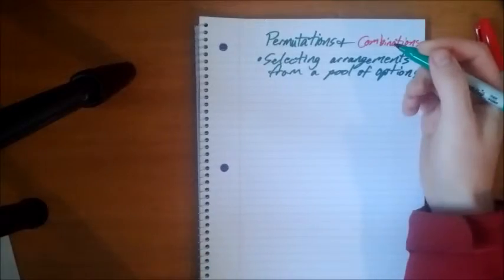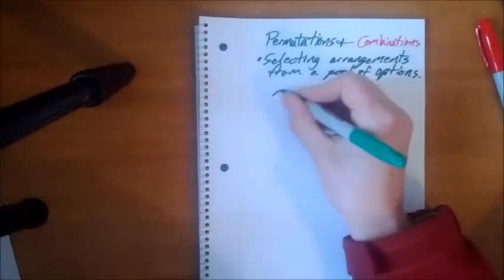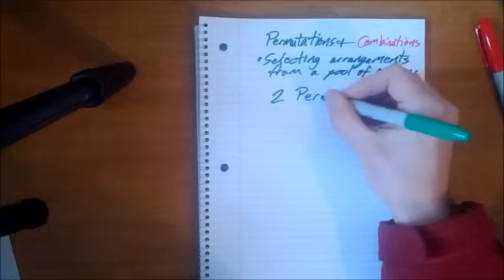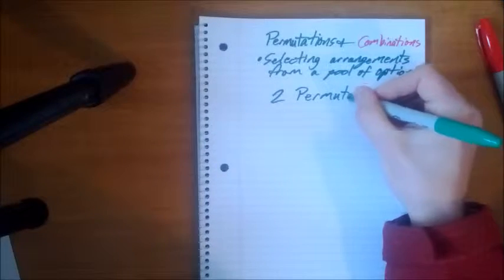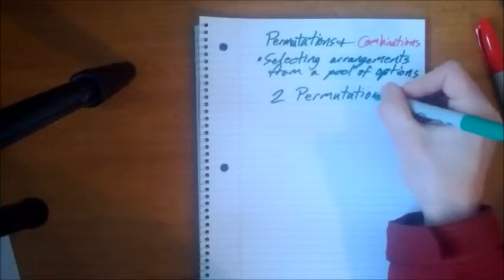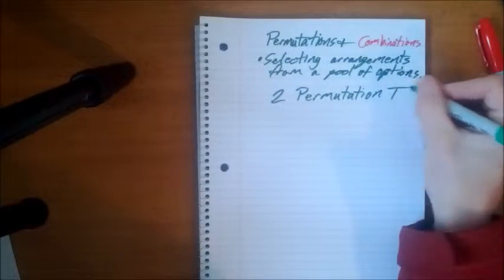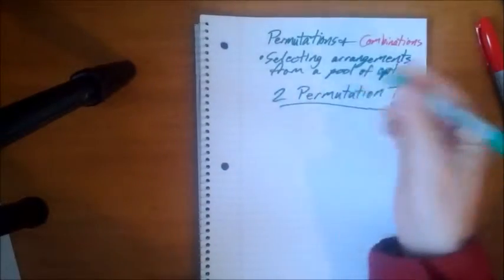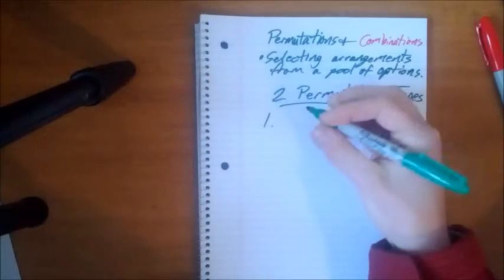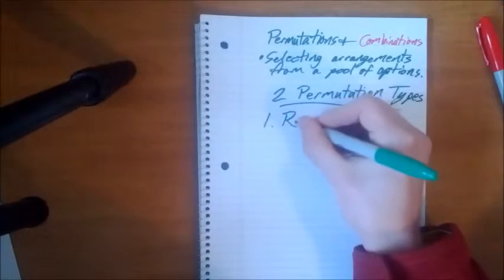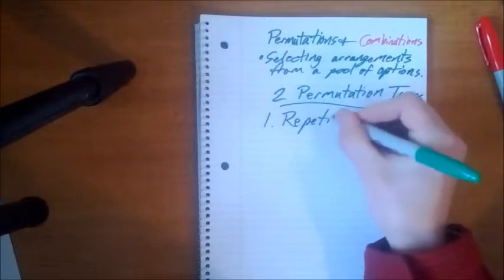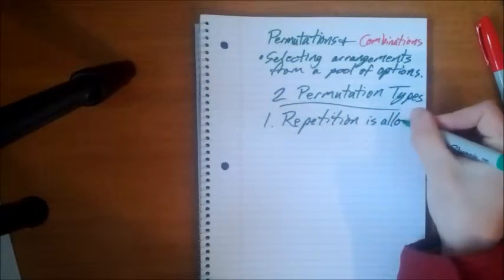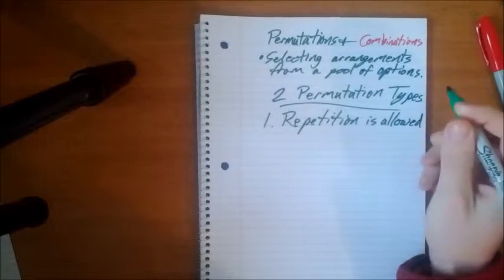Okay, so we're going to talk about two different types of permutations. There are more than these two types, but these are some of the basics. And actually, I have some subtypes in here. Number one is a permutation in which repetition is allowed. My handwriting is getting bigger and bigger.